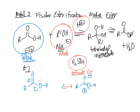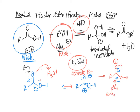The only place that can get protonated in the carboxylic acid is the lone pair on the carbonyl oxygen. You can then draw resonance structures. That is the purpose of the acid — to protonate the electrophile and make it more electrophilic.